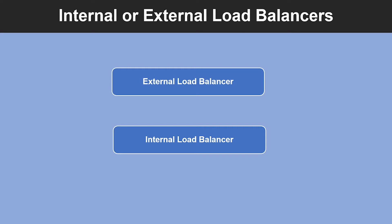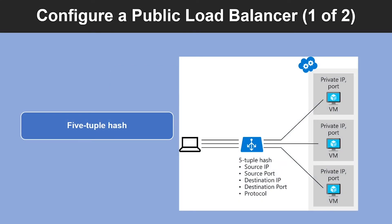Now let's understand the difference between internal and external load balancers. An external load balancer operates by distributing client traffic across multiple virtual machines and permits traffic from the internet — the traffic might come from browsers, mobile apps, and other sources. An internal load balancer distributes load from internal Azure resources to other Azure resources. For example, if you have front-end web servers that need to call business logic hosted on multiple middle-tier servers, you can distribute that load evenly using an internal load balancer.